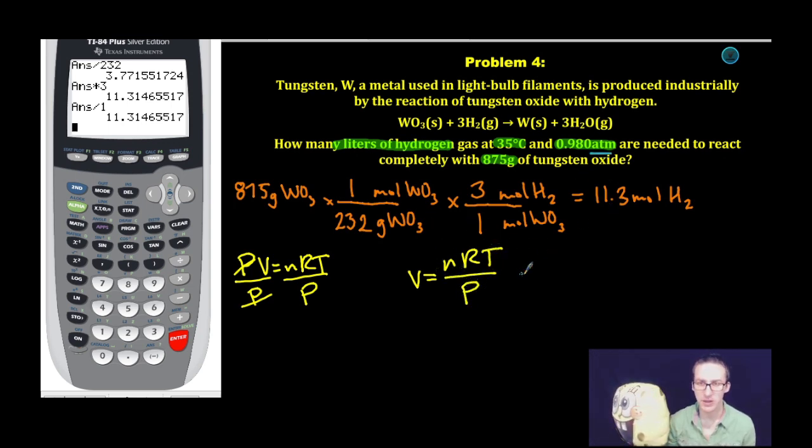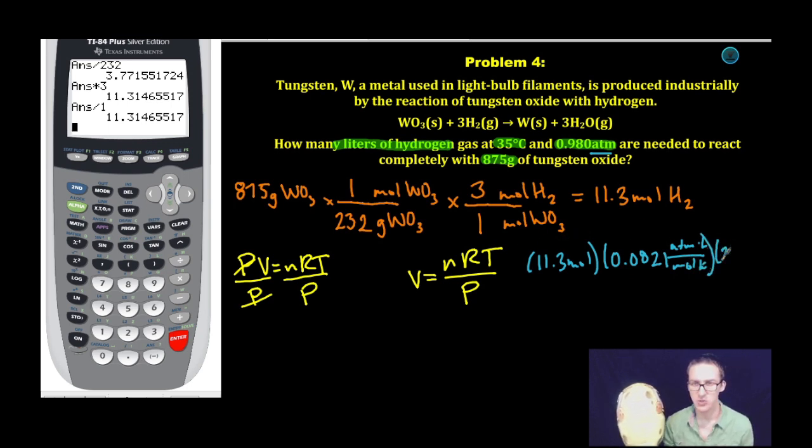Alright, so I'm just going to plug in my numbers to this rearranged ideal gas law equation. My number of moles is 11.3, solved using stoichiometry. The ideal gas constant R is 0.0821 atmospheres times liters per mole Kelvin from the formula chart, times my temperature, 298 Kelvin. Now, if you're wondering how I got 298 Kelvin, recognize that in the problem I'm given 35 degrees Celsius, and we can convert this to Kelvin by simply adding 273, which will give us 298 Kelvin.